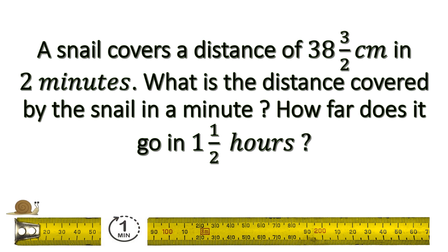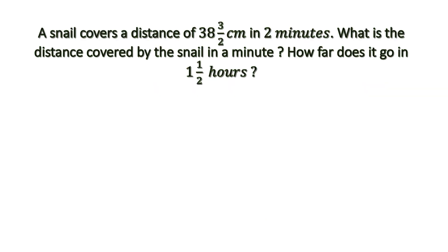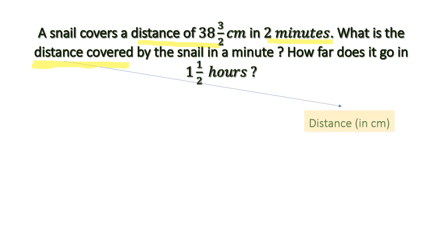In one minute, the snail will only cover half — we can understand that from the time. But to solve this problem we have to look at the information given in the question. The information we have: distance is 38 and 3/2, and we have two minutes which tells us about the time. What is being asked is the distance covered. The quantity we need to find should be on the right-hand side, so we keep distance on the right and time on the left.